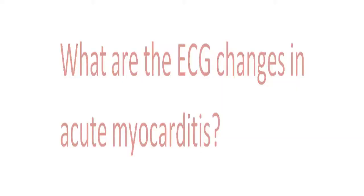What are the ECG changes that can be seen in a patient with acute myocarditis? These include STT morphologic changes, which are non-specific; intraventricular conduction disturbances; atrioventricular block; and ventricular arrhythmias.